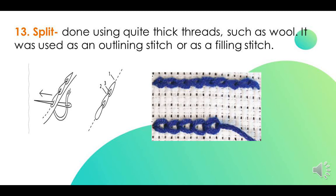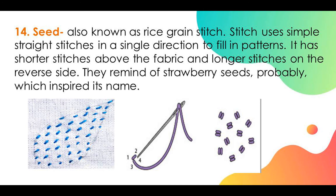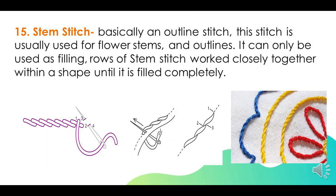Seed stitch, also known as rice grain stitch, uses simple straight stitches in a single direction to fill in patterns. It has shorter stitches above the fabric and longer stitches on the reverse side. They are reminiscent of strawberry seeds, which probably inspired its name.